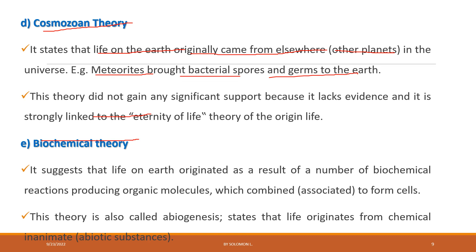The fifth theory is the biochemical theory of origin of life. This theory suggests that life on earth originated as a result of a number of chemical reactions producing organic molecules, which combined to form the first cell or first life. This theory is also known as abiogenesis — life originating from chemical or inanimate, that is abiotic, substances through different chemical reactions of molecules.